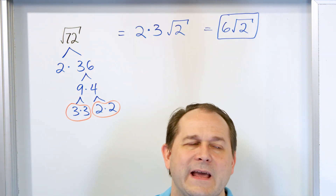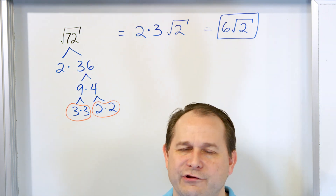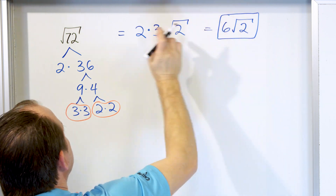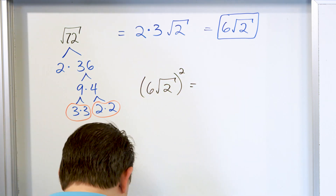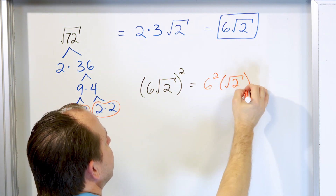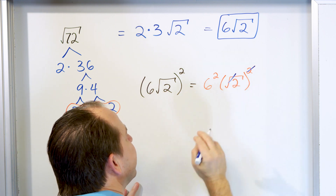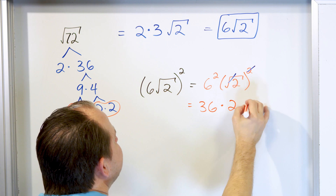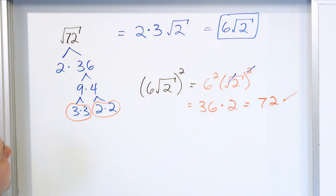In the last lesson I taught you how to check these. I'll check the first two problems, but after that we'll stop. To check: 6 times the square root of 2, squared, should give us 72. The exponent applies to every term — the 6 gets squared and the square root of 2 also gets squared. A square and a square root are exact opposites and undo each other. So you have 6 times 6 equals 36, and the 2 is left over. 36 times 2 is 72. So 6 times the square root of 2 is the correct answer.